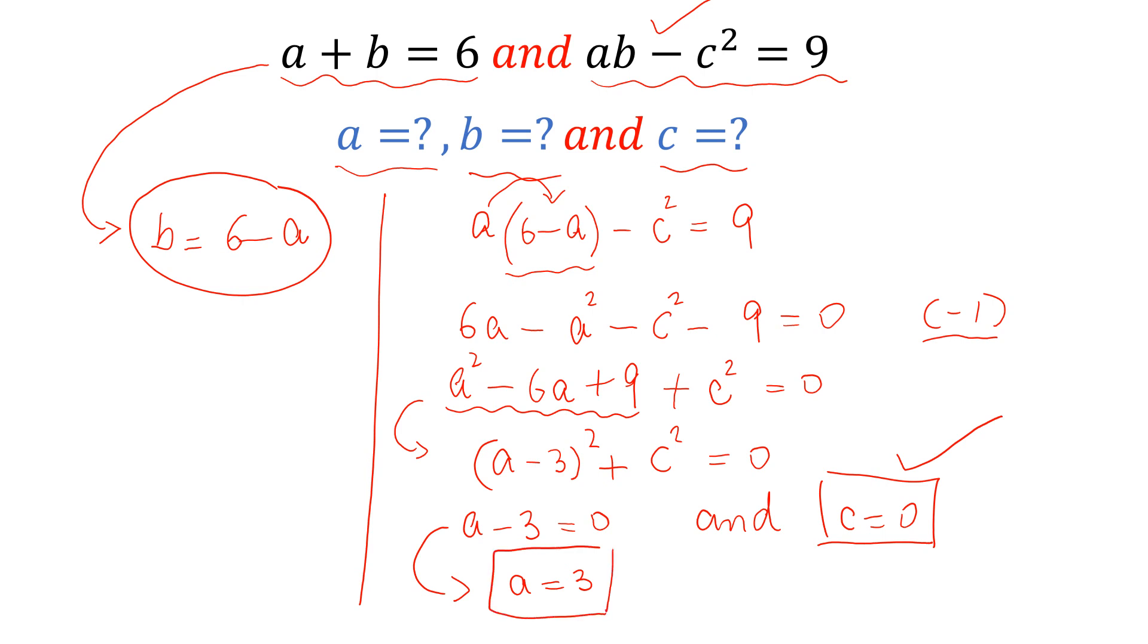So this is the second value, A is equal to 3. Put A is equal to 3 here and we can get B is equal to 6 minus 3, and B is equal to 3. So this is the value of B.